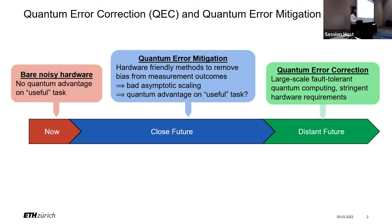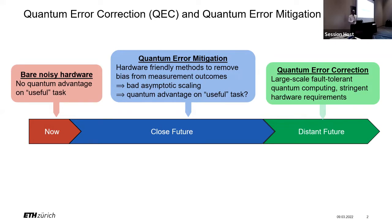We already know how we're most likely going to solve this problem: at some point in the distant future, we want to realize large-scale universal fault-tolerant quantum computing using quantum error correction, by essentially encoding our logical information in many physical qubits. Unfortunately, realizing quantum error correction in hardware has proven to be extremely difficult — both in terms of the sheer numbers of physical qubits required, and in terms of gate fidelities.